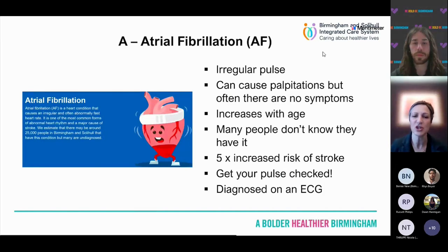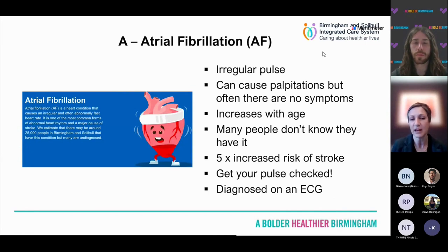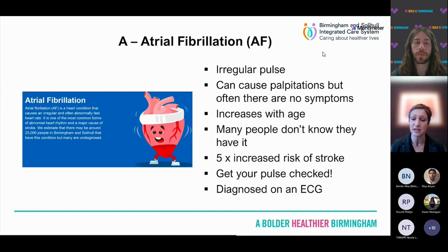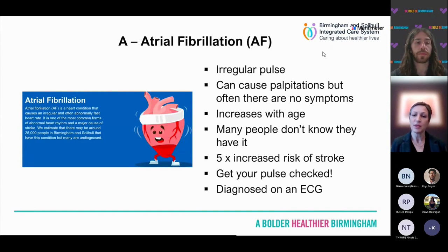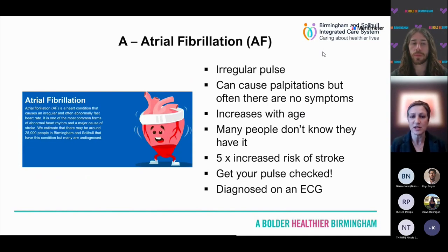A stands for atrial fibrillation, commonly called AF. AF is the most common abnormal heart rhythm, and you get an irregular pulse when you have it. Having an irregular pulse doesn't necessarily mean you have atrial fibrillation — many people now pick this up on smartwatches — but it means you need to exclude it. It can sometimes cause palpitations, but most often there are no symptoms at all. It increases with age, and approximately 10% of people over the age of 80 may have atrial fibrillation. We estimate there are about 25,000 people in Birmingham and Solihull with atrial fibrillation who don't know they have it.